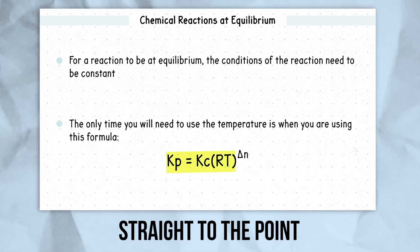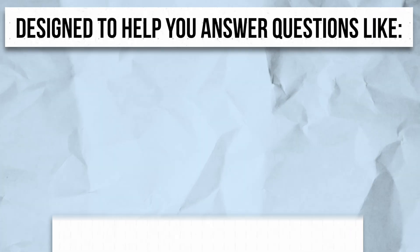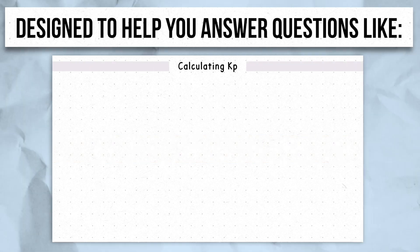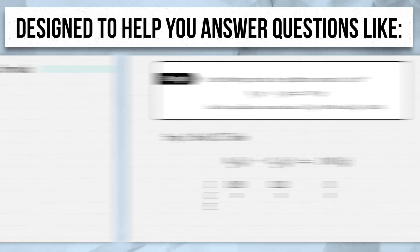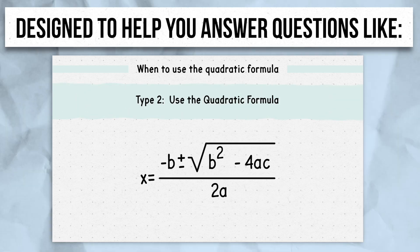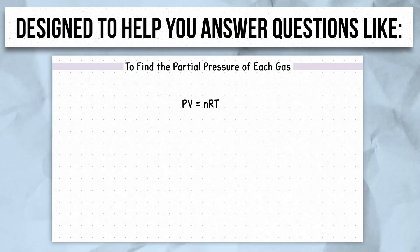I've also designed this to help answer questions like what if I have to solve for Kp or Kc or for the equilibrium concentrations? What if I need to use the quadratic formula, the excess small assumption, or the ideal gas law?